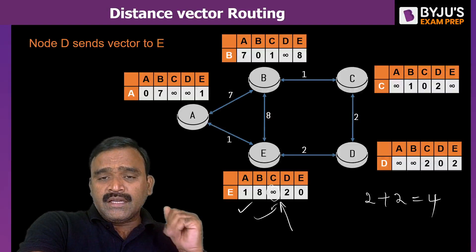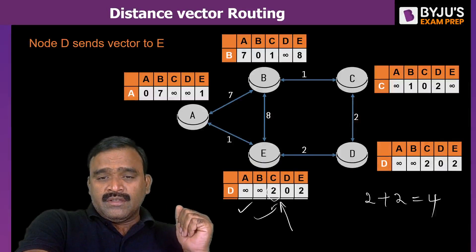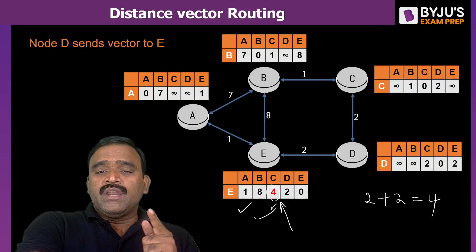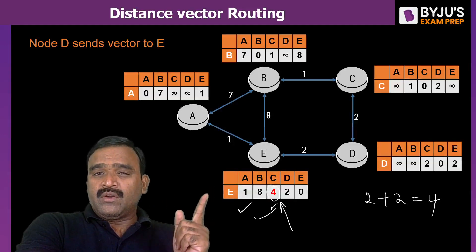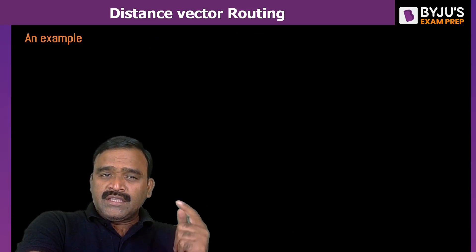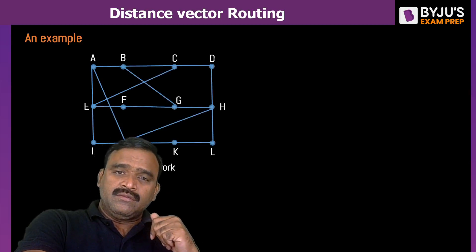So that is how we update the table. The new entry of 4 is shown in red in E's updated routing table. Earlier, E to C was infinity; now it is updated to 4. The updated routing table for E now reads 1, 8, 4, 2, 0. We can take one more example to illustrate this further.